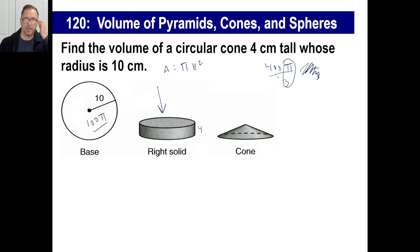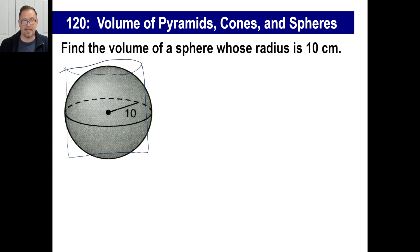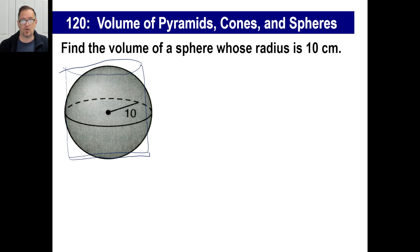Now let's try a sphere with radius 10. Imagine the sphere sitting inside a big tin can, perfectly fitting with the bottom touching and the top touching. We need to find the volume of that right circular cylinder, and then multiply by two-thirds.